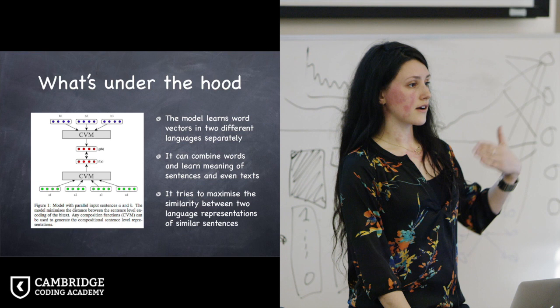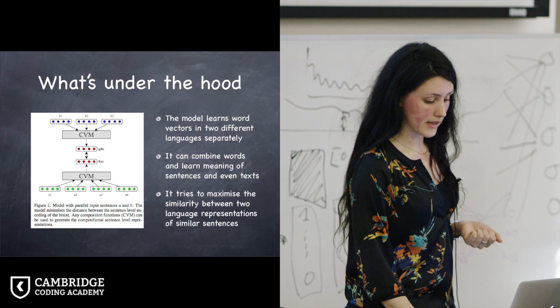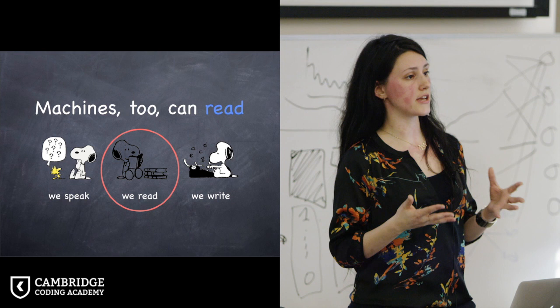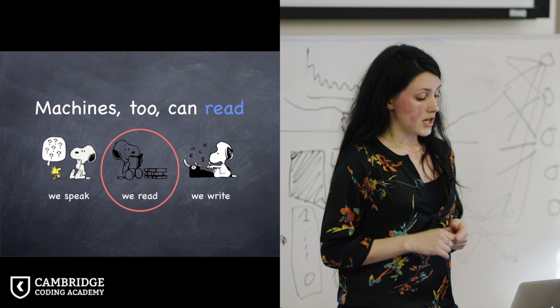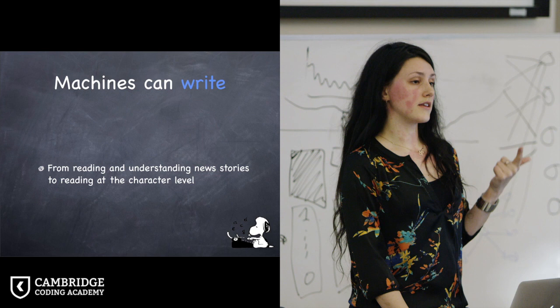The way it does that, it represents these words in the two languages separately, and then it tries to minimize the distance between the two languages, the two language representations. And that way it can learn the correspondences between the words that mean similar things in two different languages. Then we mentioned that we can read. And the recent applications show that the machines can kind of replicate this human activity as well. They can understand news stories. They can understand language at the character level involving how we write the different characters.